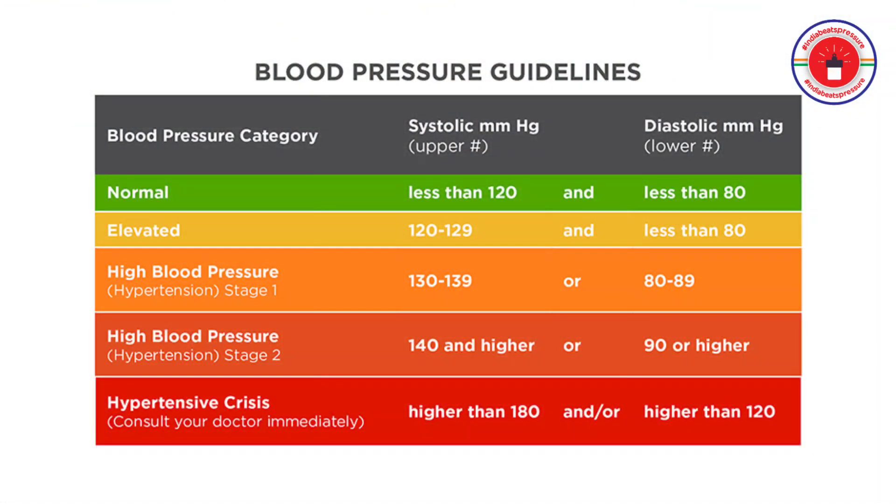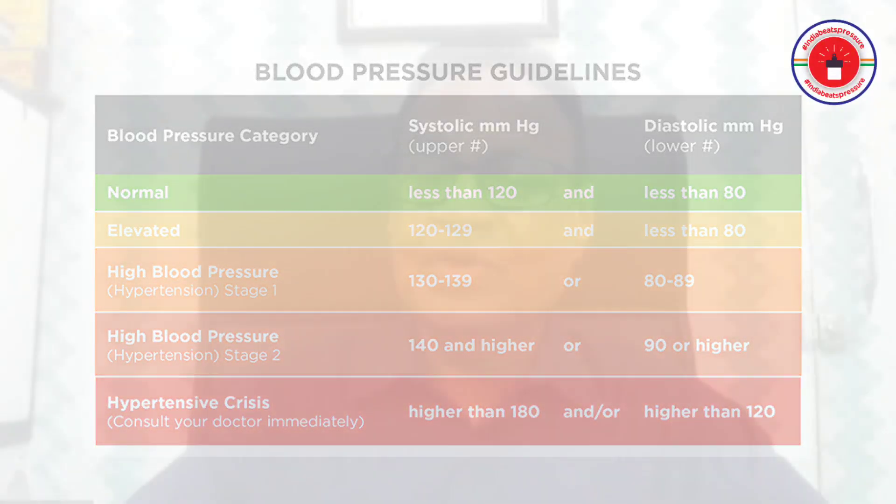What does hypertension mean? We have a normal pressure in our arteries which maintains the circulation throughout the body. But whenever it is above the normal level, we call it hypertension. Hypertension is of two types: systolic or diastolic. The normal limit of systolic blood pressure is 100 to 140 and diastolic 62 to 90. Any pressure above this limit is treated as hypertension.